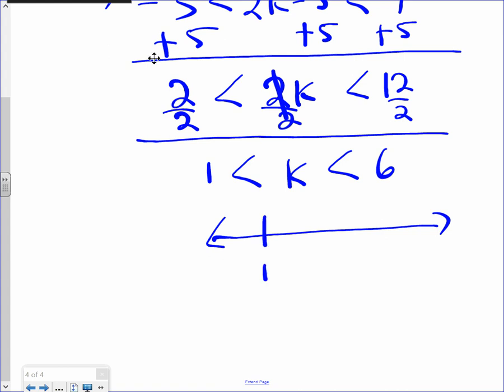So K has to be any number between those two numbers. One, open circle. Six, open circle. Shade everything in between. Done.